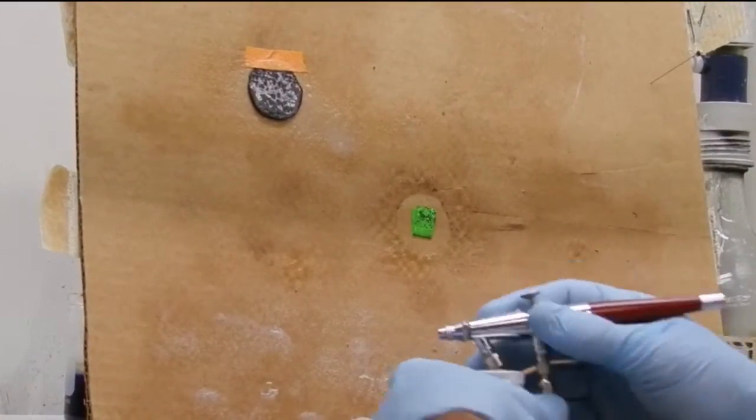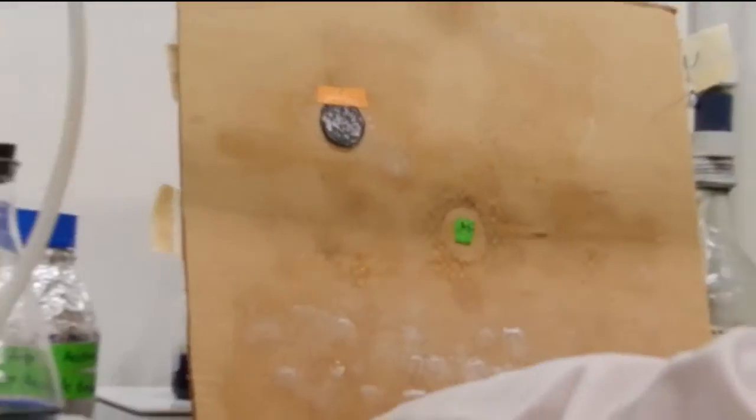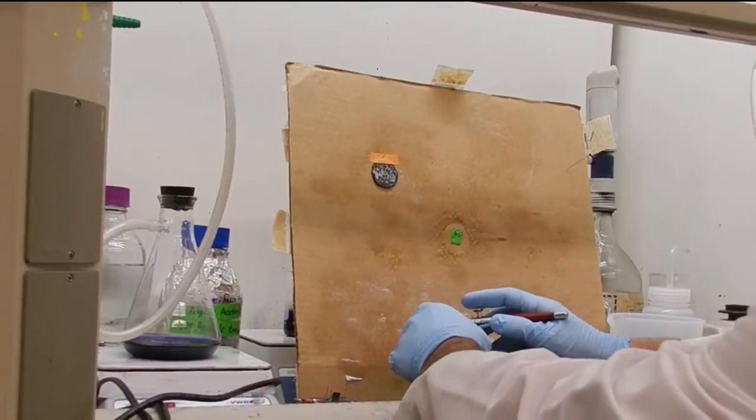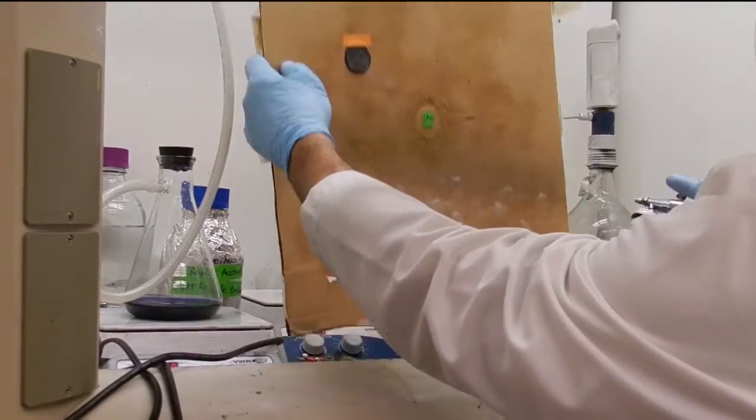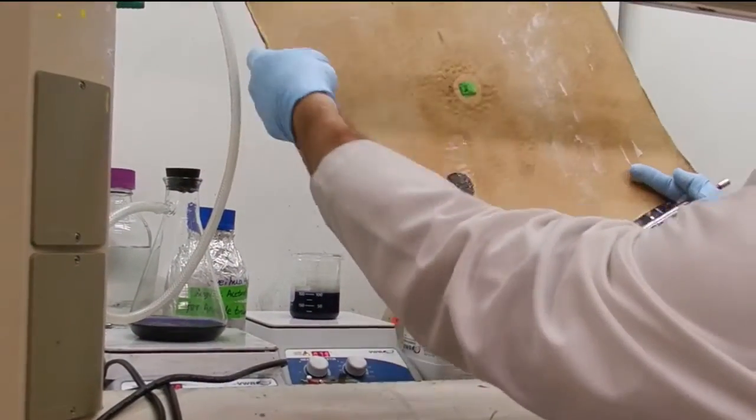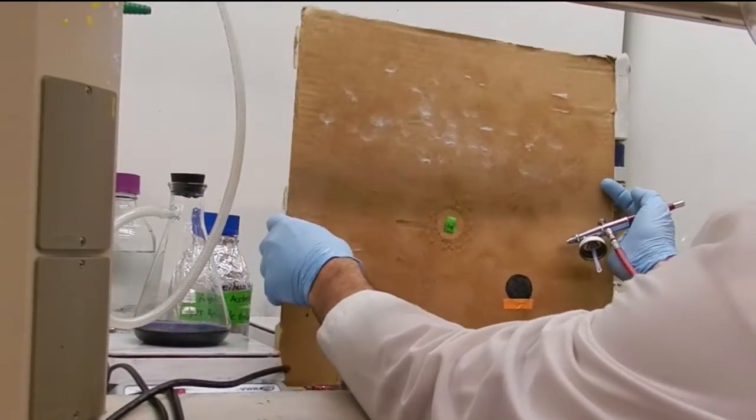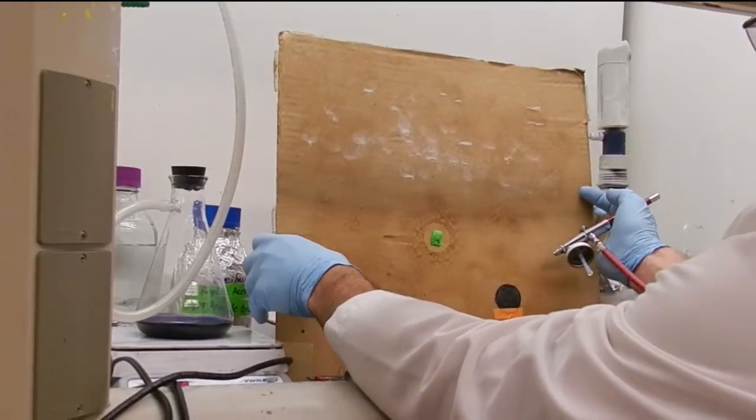Once I've applied my layer, I'm going to have to give that time to dry. I tend to flip over whatever I'm spraying on just so that all the PVA doesn't, gravity doesn't force it all to one side of the cathode.